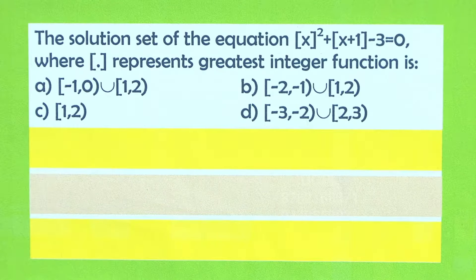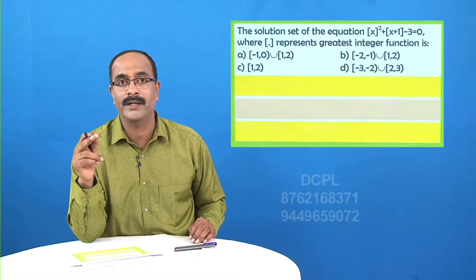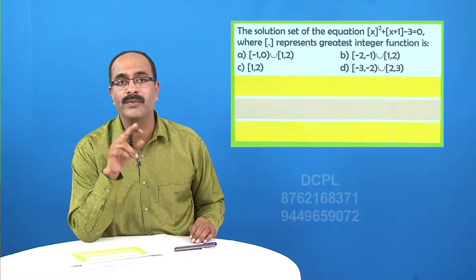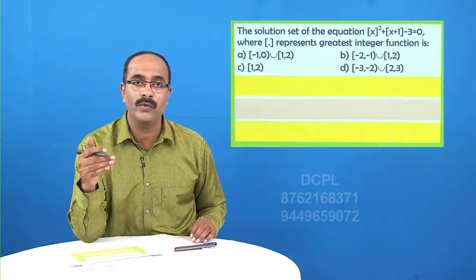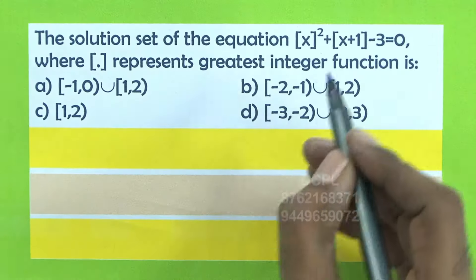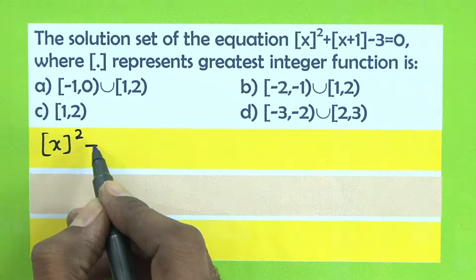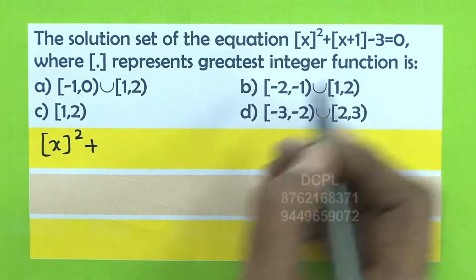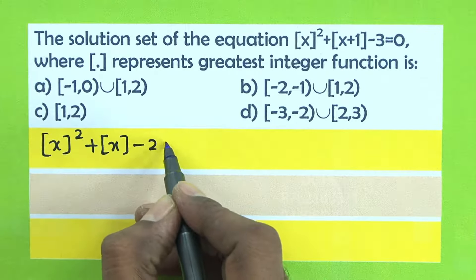Look at this: the solution set to the equation [x]² + [x+1] - 3 = 0. Note that integral part of x plus an integer n equals integral part of x plus n. So [x+1] = [x] + 1. Therefore the equation becomes [x]² + ([x] + 1) - 3 = [x]² + [x] - 2 = 0.